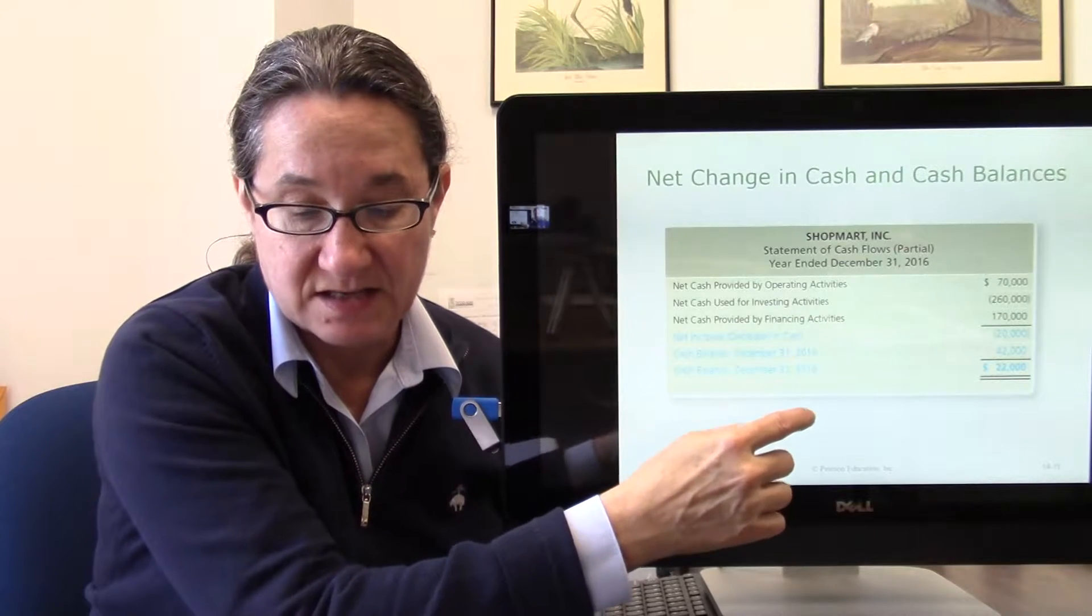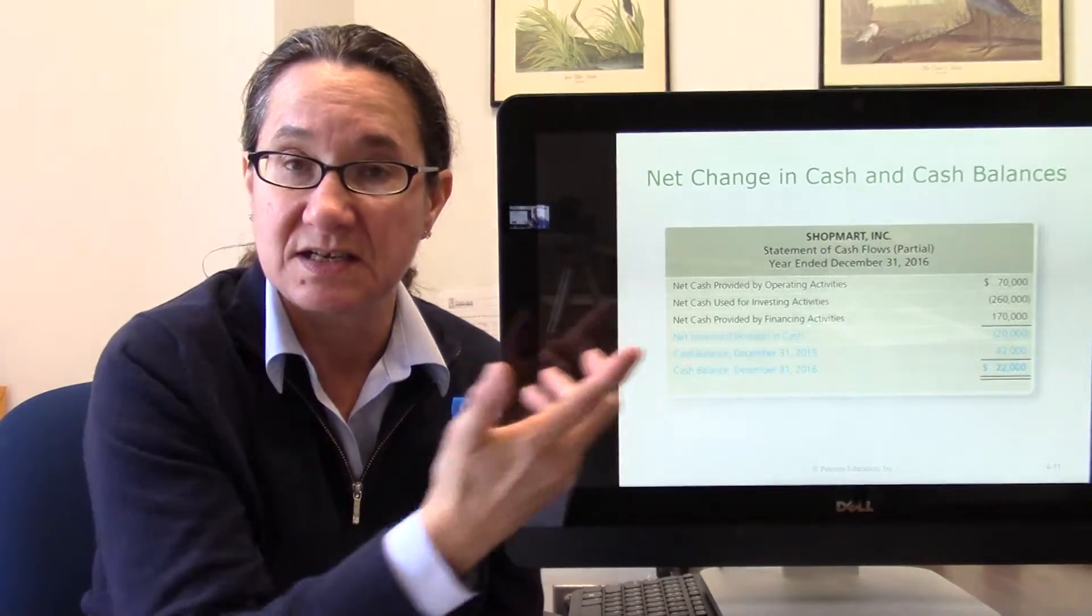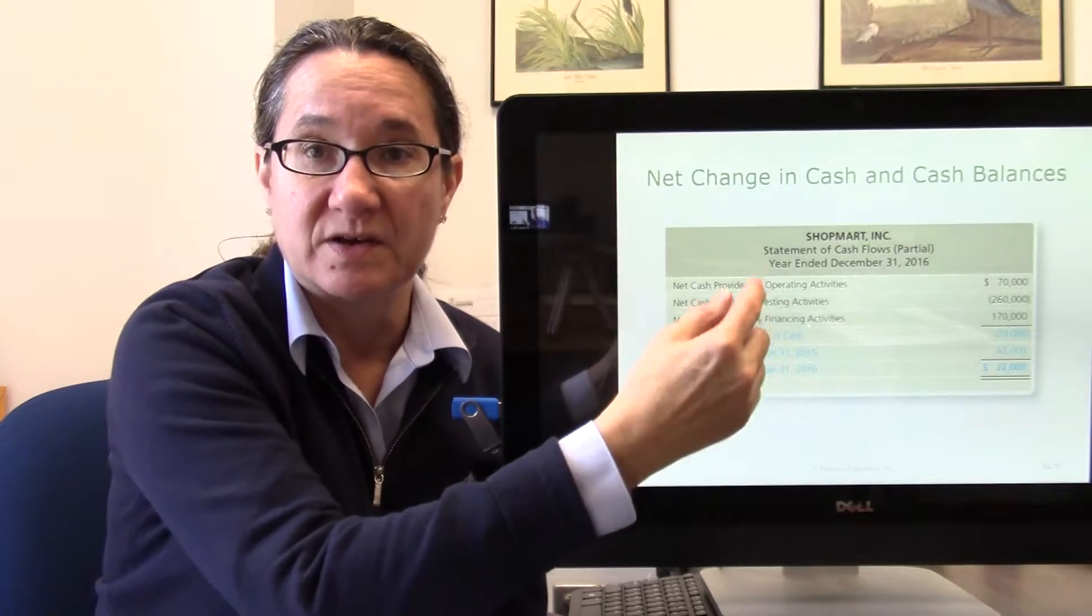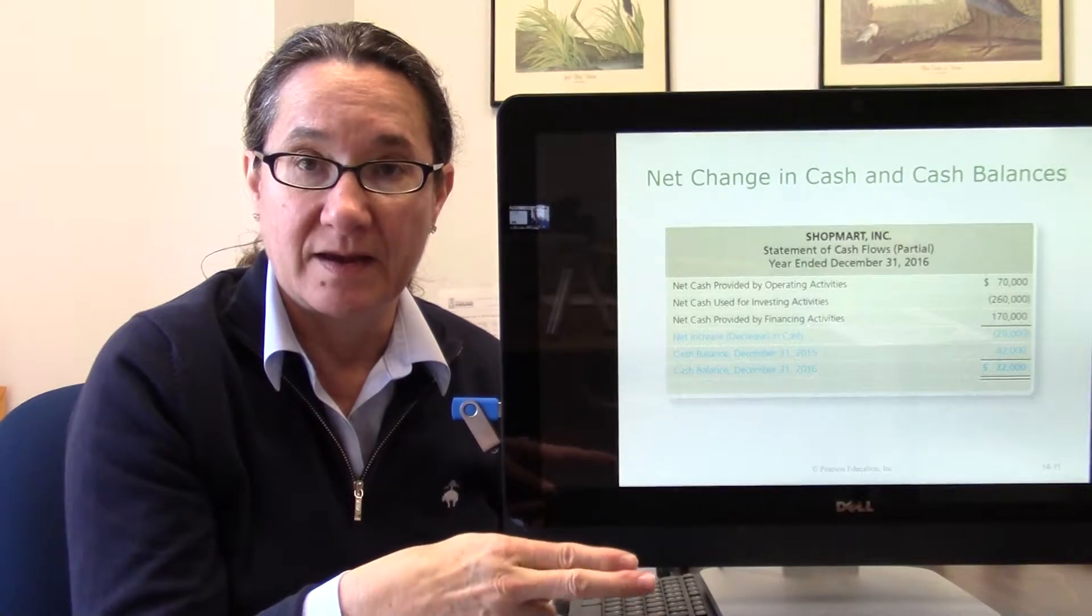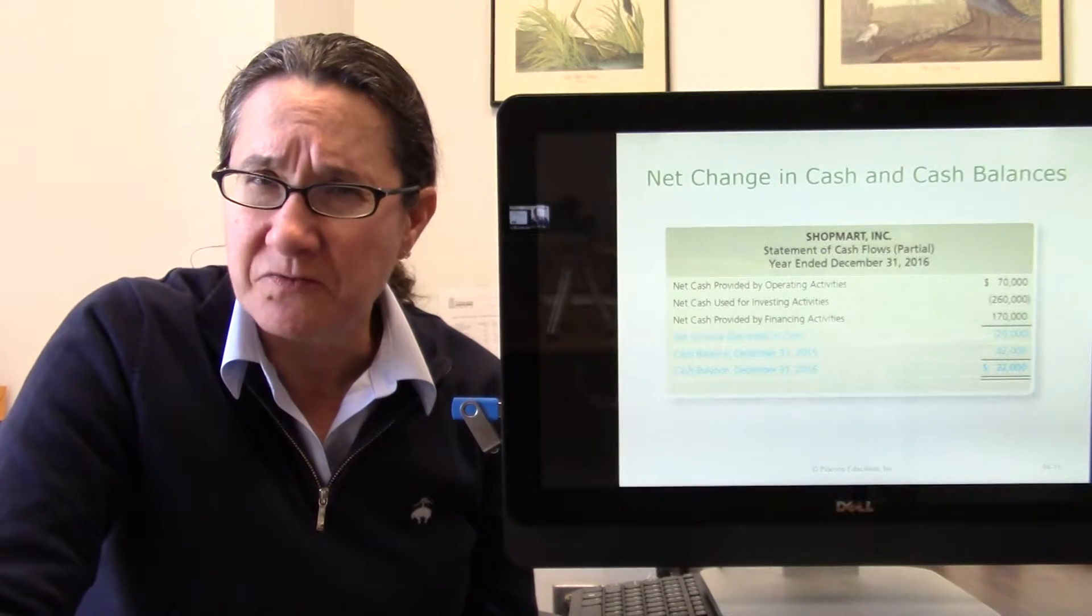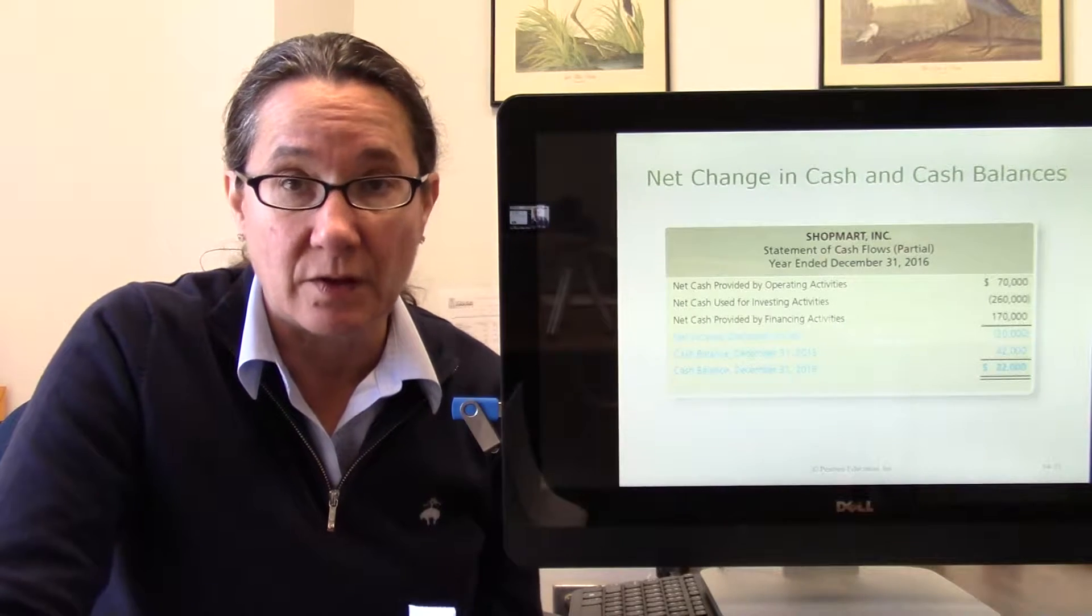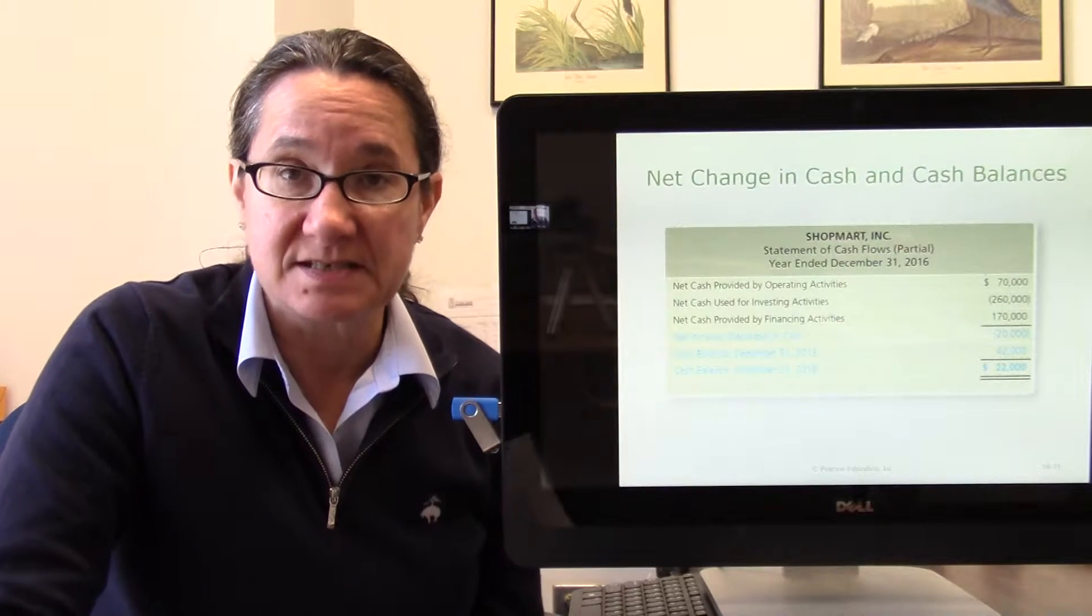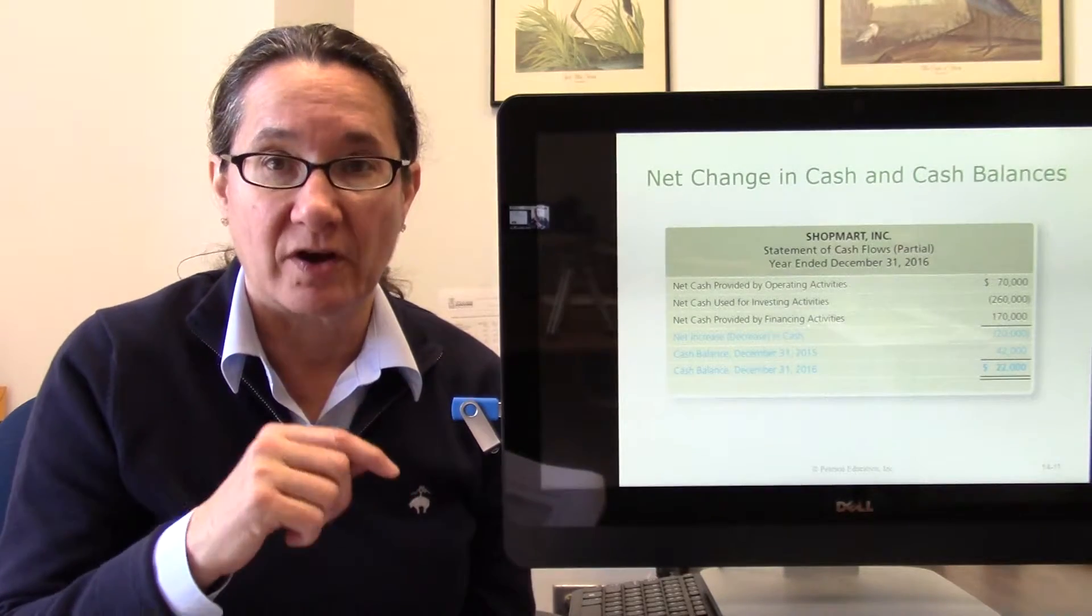You take negative 20,000, add it to the beginning cash balance, and that gives you your ending cash balance. You've looked at how the income statement affected the cash flows and what parts were from operating, investing and financing, and you've got an increase or decrease in cash that you already knew from the balance sheet. But what you're doing here is trying to figure out, of those cash flows that changed, where did it come from? Is it from running the business operating or did they get a bunch of cash in by borrowing it? This is a nice clear picture of what's going on with cash.